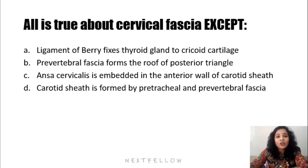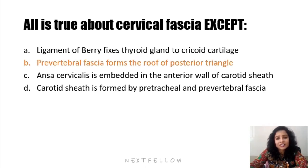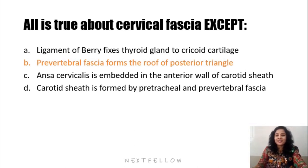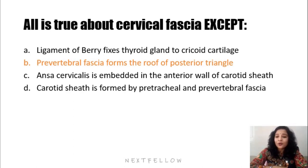Addressing another question — all is true about the cervical fascia except: the ligament of Berry fixes the thyroid gland to the cricoid — that is true. Pre-vertebral fascia forms the roof of the posterior triangle — this is false; it forms the floor, not the roof. The roof is formed by the investing layer of deep cervical fascia, while the floor is formed by the pre-vertebral fascia covering the paravertebral muscles. Ansa cervicalis is present in the anterior wall of the carotid sheath — also true. This completes the anatomy of deep cervical fascia and the spaces associated with it. Thank you.